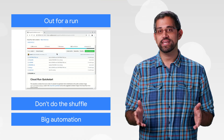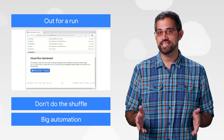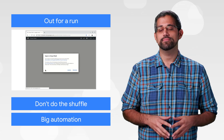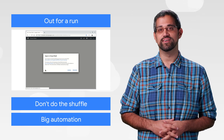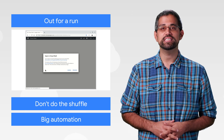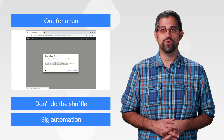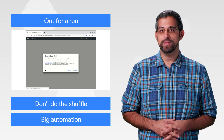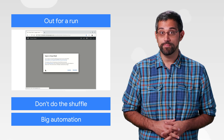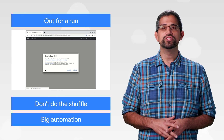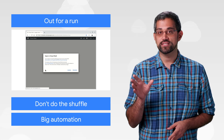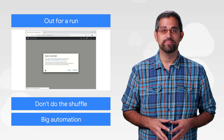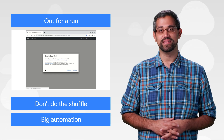Cloud Run lets you deploy containerized serverless applications without having to worry about operations, scalability, or security. Now it's even easier to share your code with the Cloud Run button, a one-click process for people looking at your Git repo to deploy your app to Cloud Run. Just make sure your code has a Dockerfile or uses Cloud-native build packs and copy the button into the README.